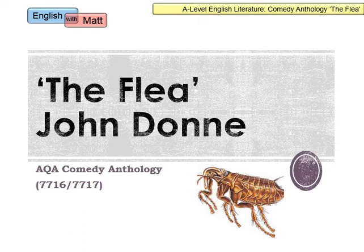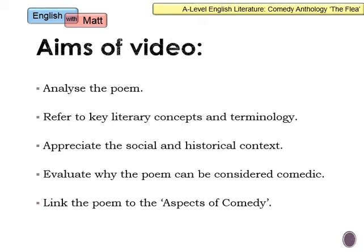The aims of this session are these. For AO2, I'm going to be talking you through the key annotations of this poem. For AO1, I'll be referring to key literary concepts and terminology — the mark scheme says 'terminology associated with literary study.' For AO3, I'll mention social and historical context. For AO4, I'll be mentioning comedy, because A-level tends to be led by genre, and you need to see these texts through the lens of that genre, consistently linking to aspects of comedy.